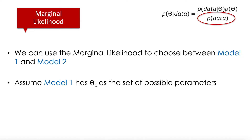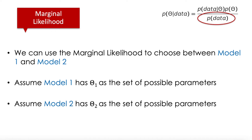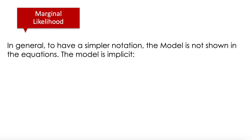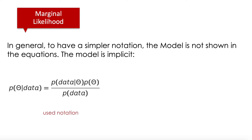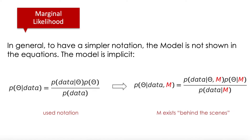Imagine model 1 has theta 1 as its set of possible parameters, and model 2 has theta 2. Something I haven't said yet is that in our posterior equation, we never mention explicitly the existence of the model — we only mention the parameters. Recall that this is the usual notation for the Bayes rule for our posterior distribution of the parameters. But we know that the model exists behind the scenes, because if we are talking about a set of parameters theta, it means we are already talking about one specific model. In general, we don't add it into the notation for simplicity, but the model exists.